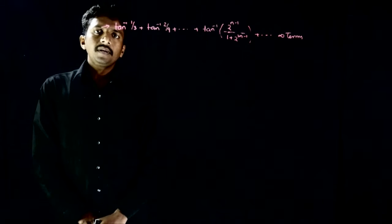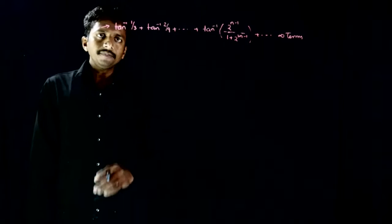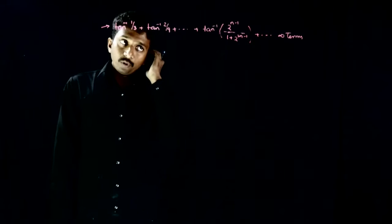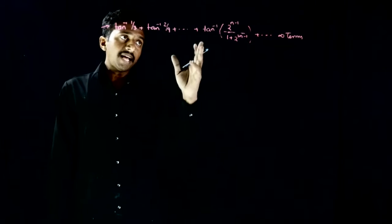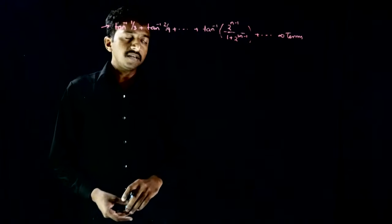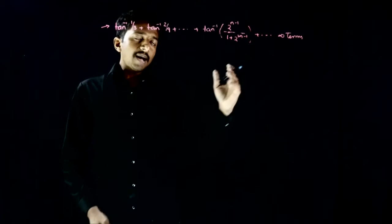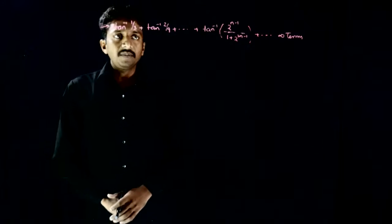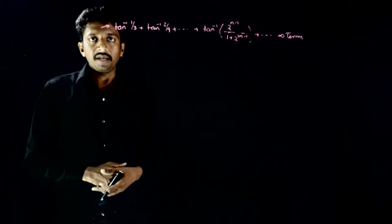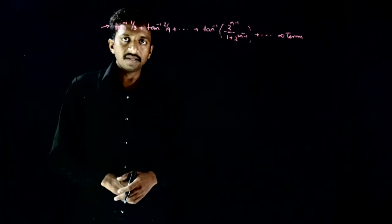Welcome students. This question has been given to you: tan inverse of 1/3 plus tan inverse of 2/9 plus so on, with the general term tan inverse of 2^(n-1) divided by 1 plus 2^(2n-1). Up to infinite terms, what is the sum of this sequence? This is what is being asked.